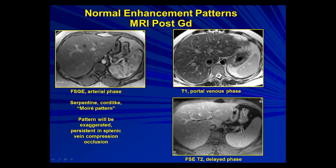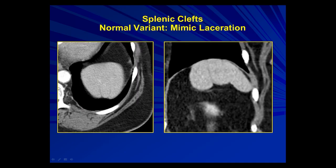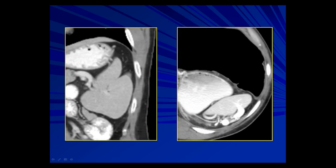The moiré pattern can be exaggerated in patients with splenic vein compression or occlusion, and it disappears on the venous phase, where the spleen should become homogeneous. The spleen can also have little clefts, which usually confuse people on trauma cases — you might think it's a laceration, but there's no subcapsular or perisplenic blood. Get used to looking for these; you'll see them quite commonly.